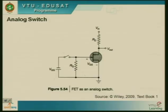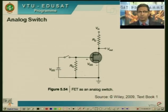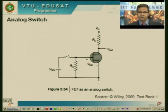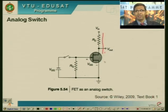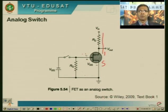Moving on, what could be a possible circuit for an analog switch? This particular circuit uses a JFET. Can you tell me whether it is a P-type or N-type JFET? How is the circuit configuration? We have the voltage source, the power supply connecting the drain resistance to the drain, and then we have the drain, the source, and the gate. So how is it that you could operate it as a switch?